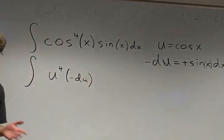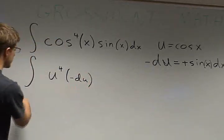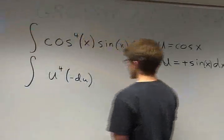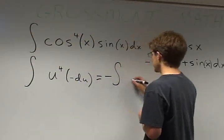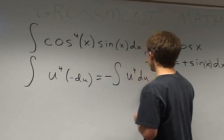But since that negative 1 is a constant, we can pull it out. And so this is equal to negative integral of u to the fourth du.